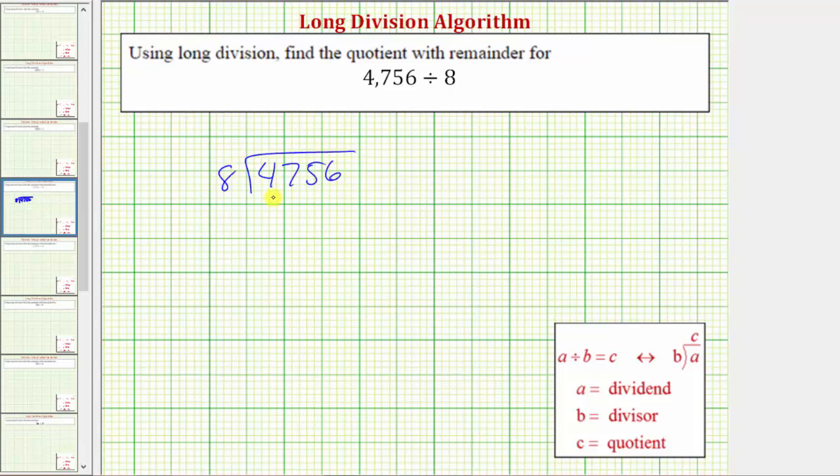Now to begin performing long division, we only consider the leftmost digit of the dividend, which is the 4 in 4,756. So considering only the 4, we need to determine how many eighths there are in 4.